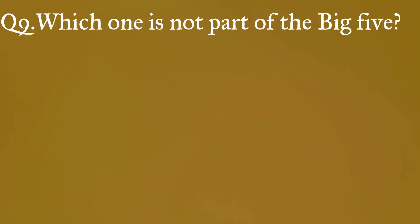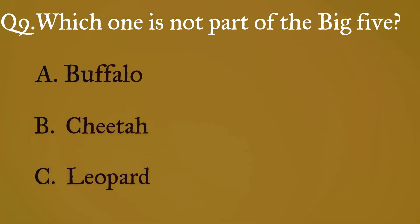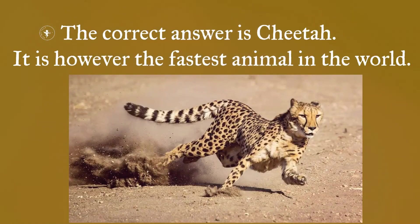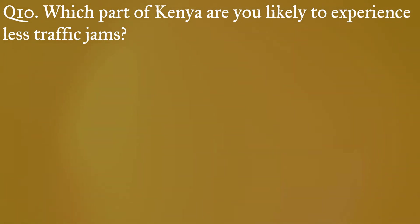Question 9: Which one is not part of the Big Five? A: Buffalo, B: Cheetah, C: Leopard. The correct answer is Cheetah — it is however the fastest animal in the world.